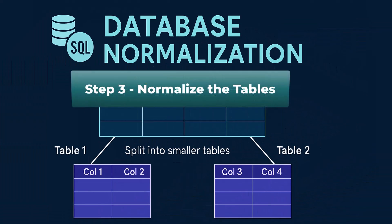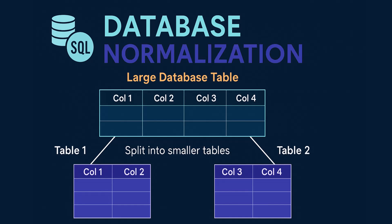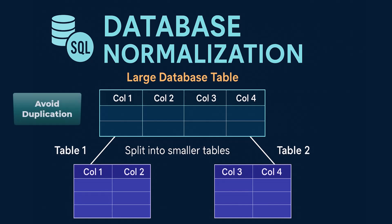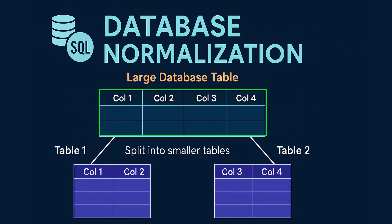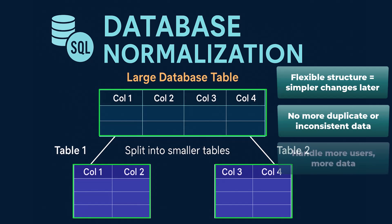Once you've created your first table, it's important to follow a logical flow — not just throw tables together randomly. In technical terms this is called normalization. It means organizing your data in a way that avoids duplication and keeps things clean and structured. Instead of one big messy table holding everything, you break it into smaller tables, each one focused on just one thing. This makes your database easier to update, less error-prone, and much easier to scale.